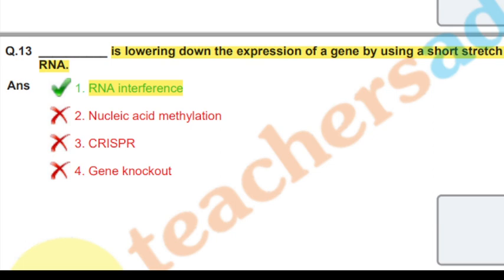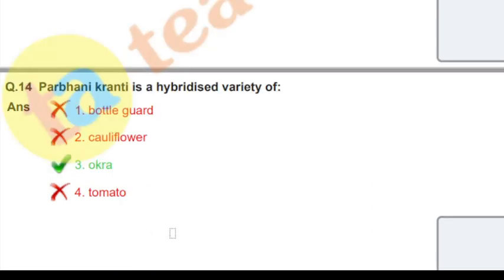Next question: Prabani Kranti is a hybridized variety of what? Prabani Kranti is a hybridized variety of okra. The right answer is okra. This question is from the hybrid variety section.